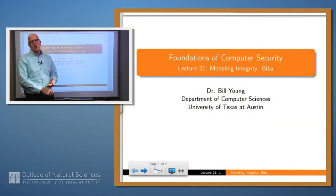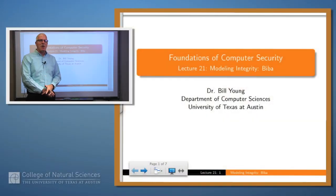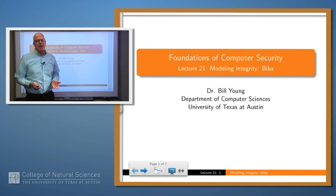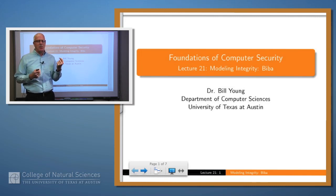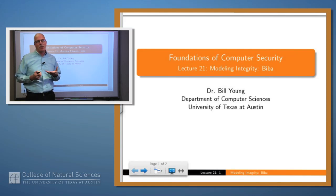In our last lecture, we talked a little bit about integrity policies and how one might model integrity. As we did with confidentiality, we said that you could assign integrity labels to subjects and objects, and then you could compute the dominates relation on those labels.